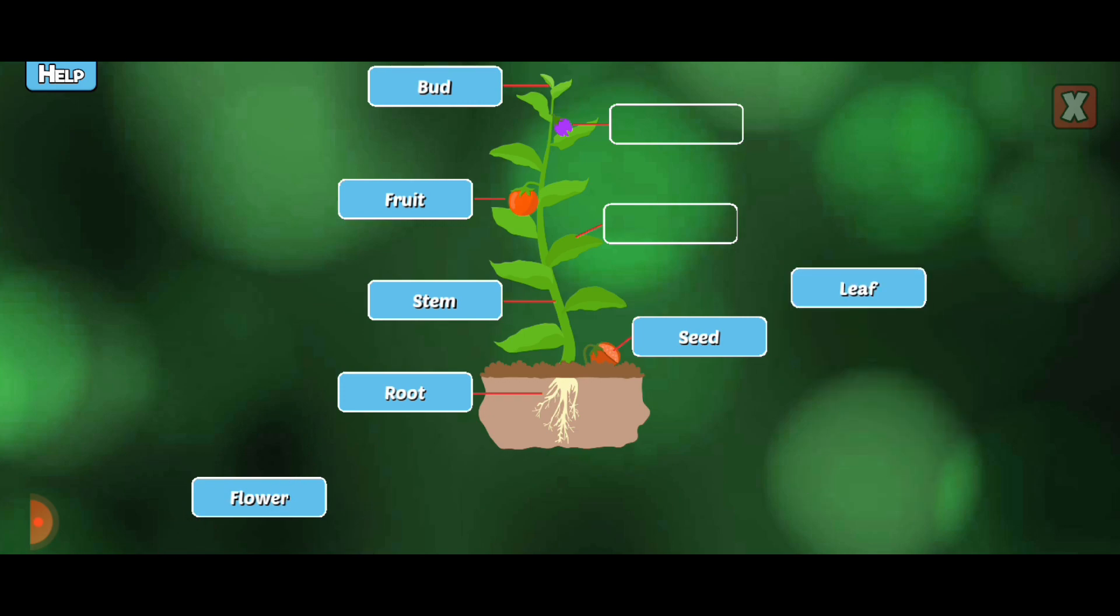Leaves. Leaves make most of the food for a plant using photosynthesis.